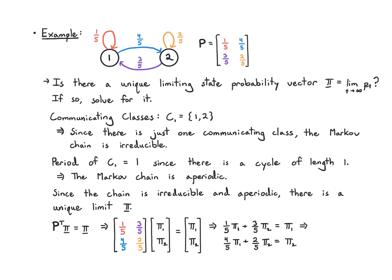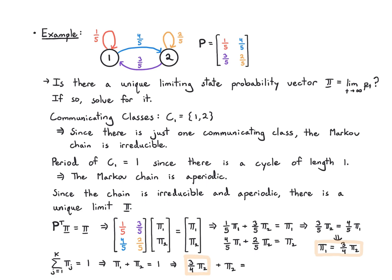Taking the first equation, it tells me that (3/5)pi_2 = (4/5)pi_1, meaning pi_1 = (3/4)pi_2. Using normalization — pi_1 + pi_2 = 1 — I substitute in for pi_1 and solve for pi_2. This gives pi_2 = 4/7, and then coming back to the relation, pi_1 = 3/7.